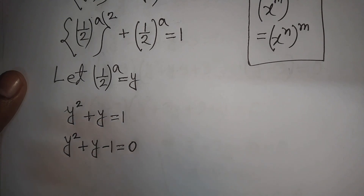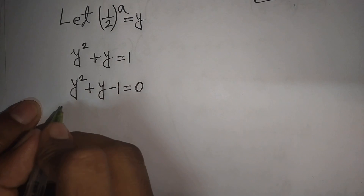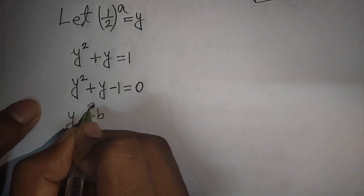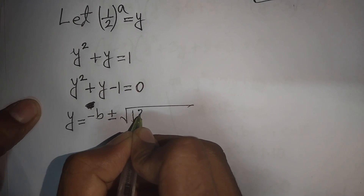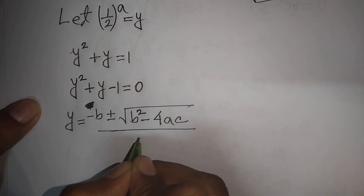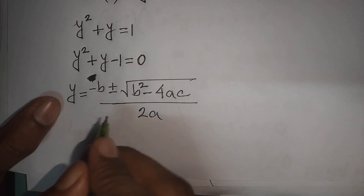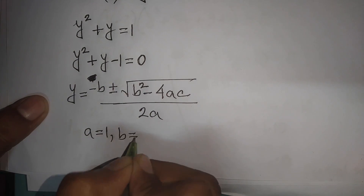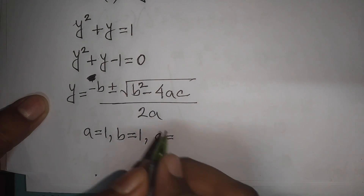We rearrange: y squared plus y minus 1 equals 0. Now we apply the quadratic formula: y equals negative b plus or minus square root of b squared minus 4ac, all divided by 2a. Here a equals 1, b equals 1, and c equals negative 1.